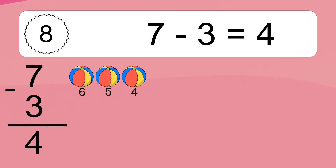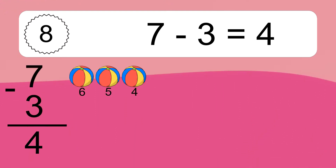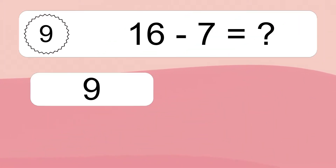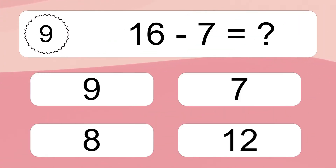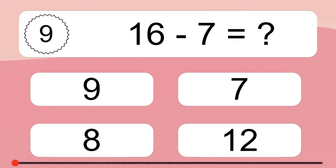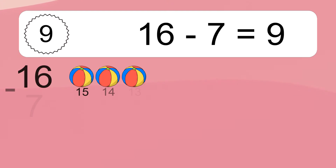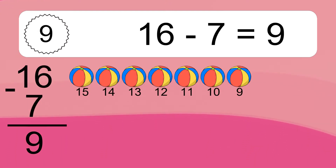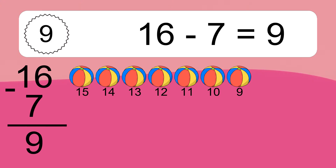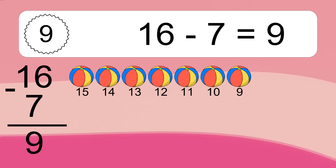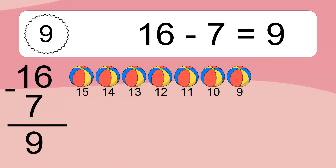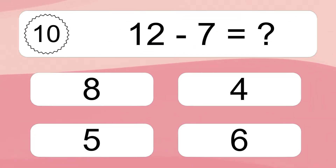7 minus 3 equals 4. Let's count it. 6, 5, 4. 16 minus 7 equals what? 16 minus 7 equals 9. Let's count it. 15, 14, 13, 12, 11, 10, 9.